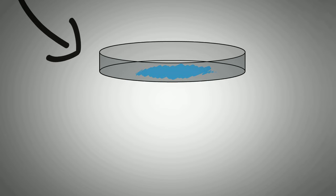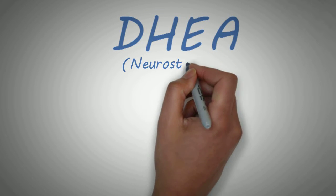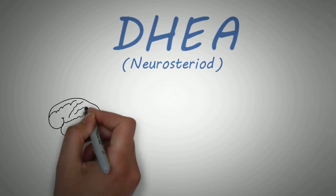More specifically, those that saw stress as enhancing released a chemical in their body called DHEA. Kelly says DHEA is a neurosteroid, which is exactly what it sounds like, a hormone that helps your brain grow.